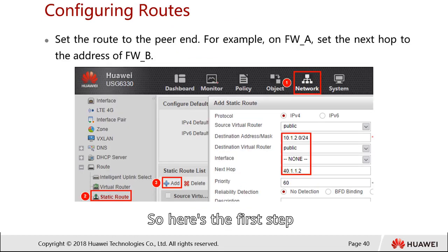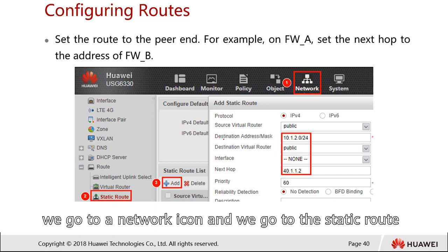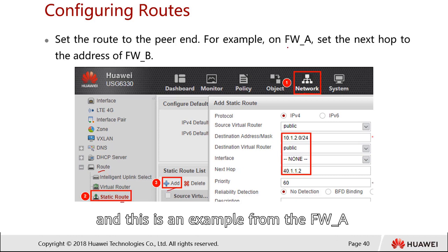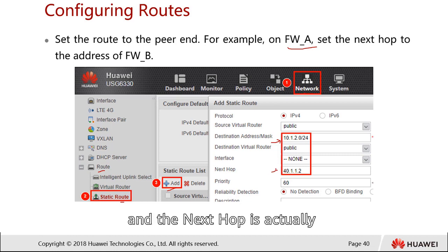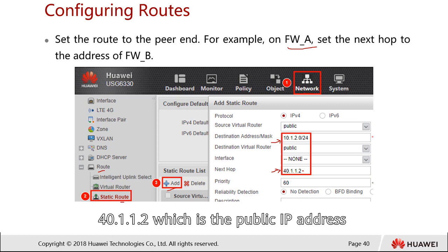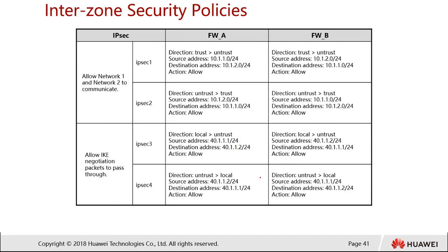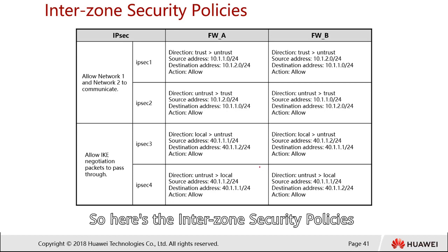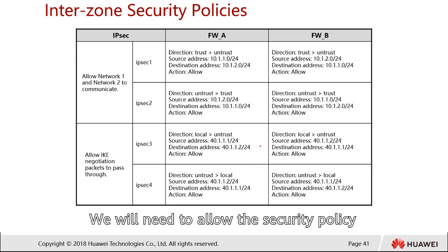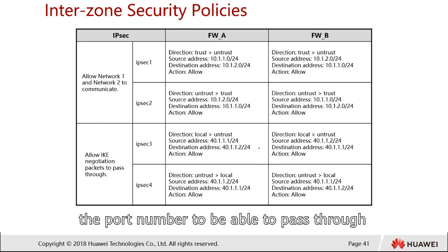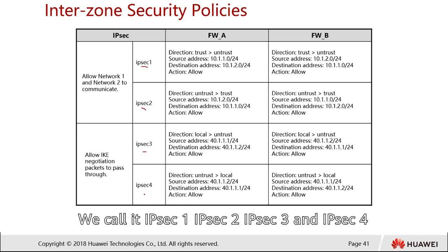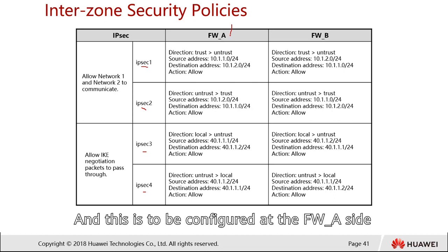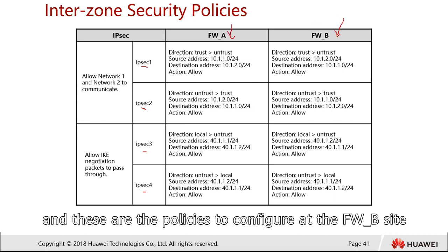For the first step, we go to the Network icon, then to Route > Static Route, add a new static route. From Firewall A, the destination is 10.1.2.0 and the next hop is 40.1.1.2, which is the public IP of Firewall B. Then we configure the inter-zone security policy. We need to allow relevant traffic to pass through, so we configure four policies: IPSec1, IPSec2, IPSec3, and IPSec4 — two at Firewall A and two at Firewall B.